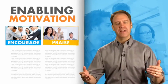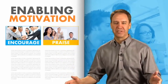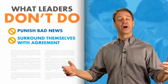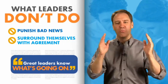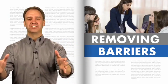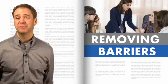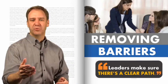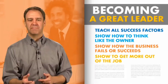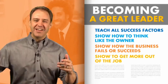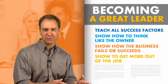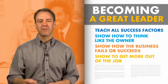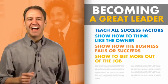As a leader, you encourage people, give them praise — you say, hey, you did a really good job on that last week, keep up the good work. Leaders don't punish people for coming to them with bad news, and they don't gather people around them who just agree with them. Great leaders know what's going on. Great leaders not only enable motivation, but also remove barriers — things like limited resources or processes not in place. Leaders will make sure there's a clear path for people to do what they're capable of doing. Leaders teach all the factors that make a successful business, show everyone how to think like they are the owner, and how the business fails or succeeds. Leadership is always evolving — people evolve, the company evolves, processes evolve, and leadership has to move along with it.